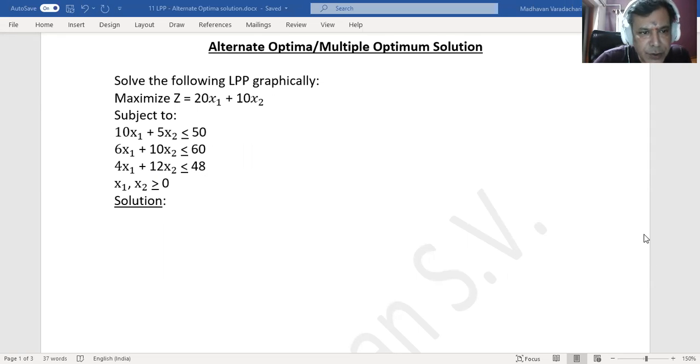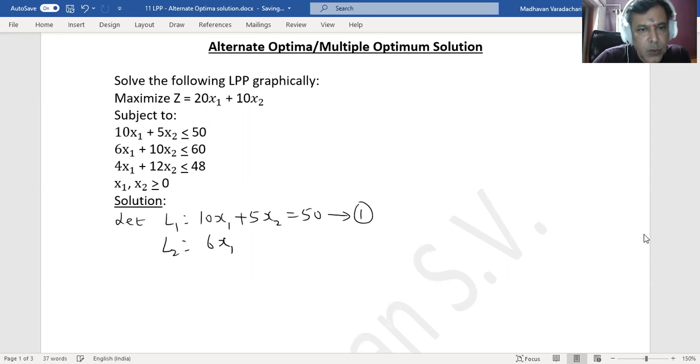First of all, let us convert the inequations to equations. Let L₁ be 10x₁ plus 5x₂ equal to 50, call it equation 1. L₂ be 6x₁ plus 10x₂ equal to 60. Then L₃ be 4x₁ plus 12x₂ equal to 48.